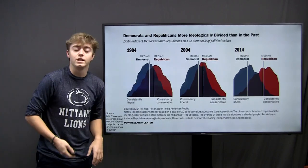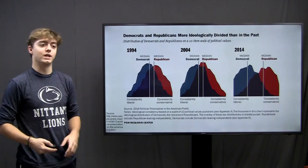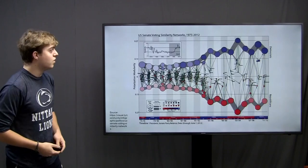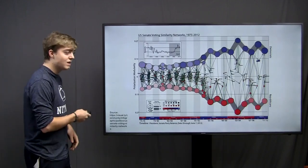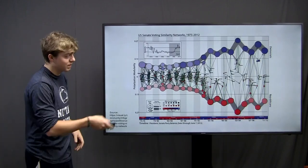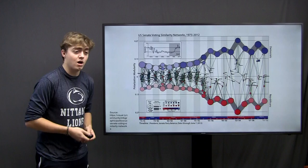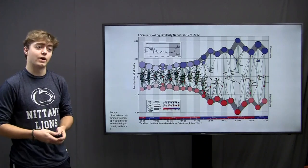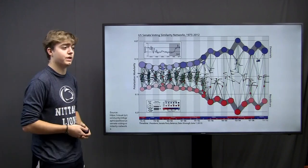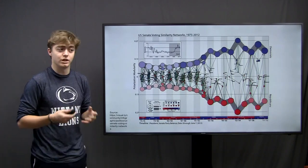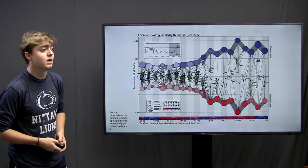We can also look at U.S. Senate voting data, where from 1970 to the present day, votes within Congress have become increasingly polarized due to the political party that you are on.